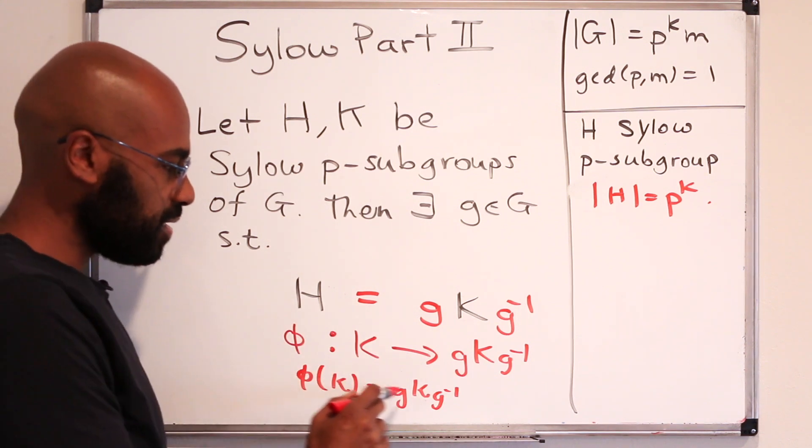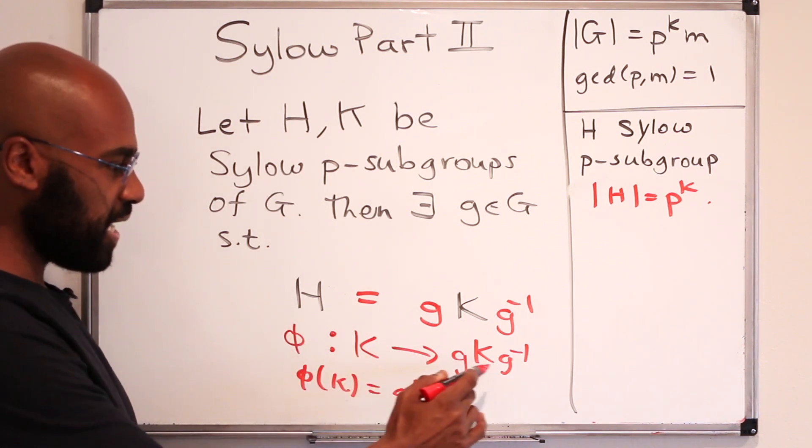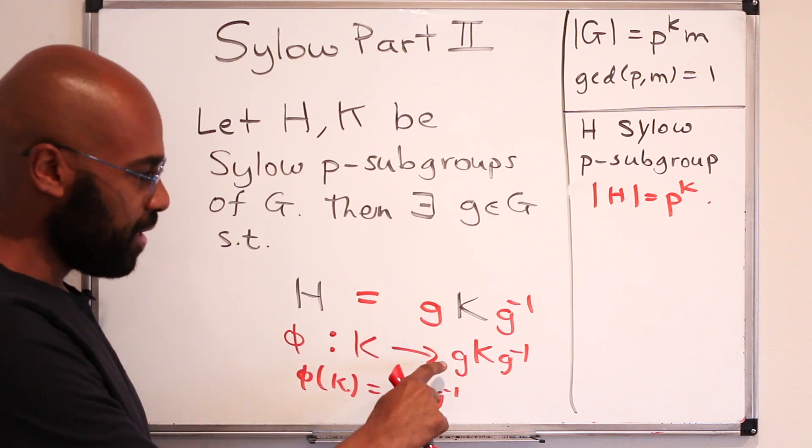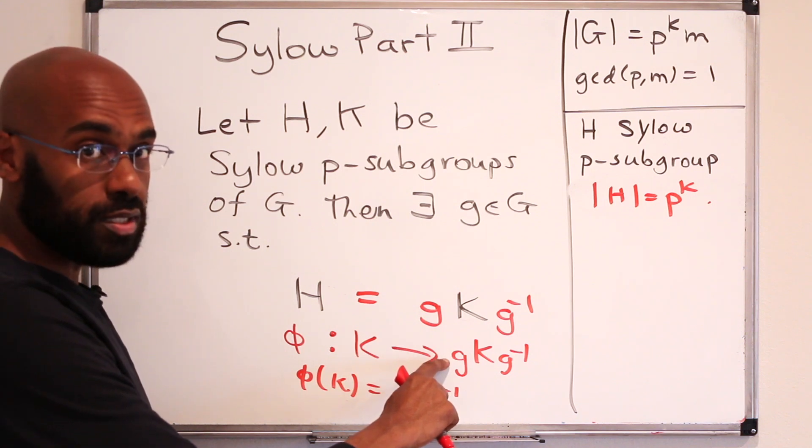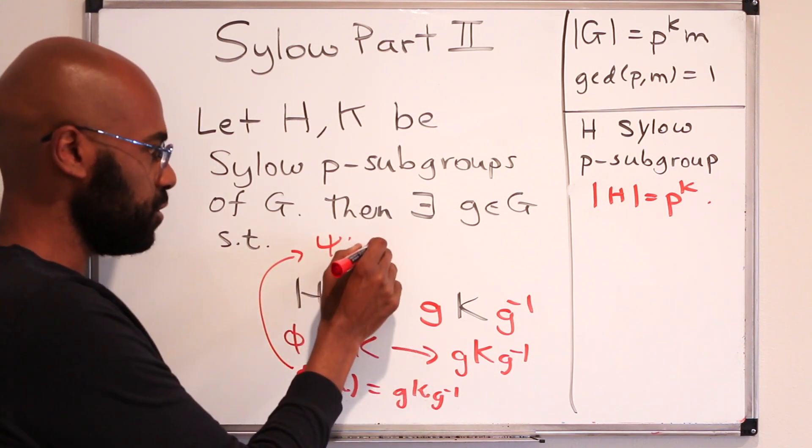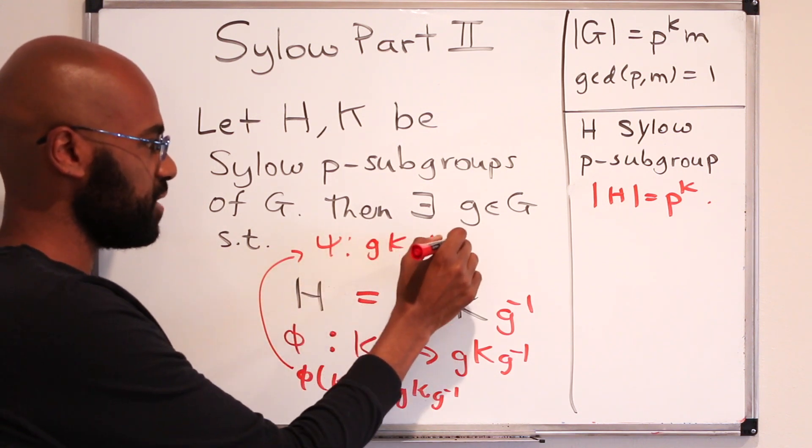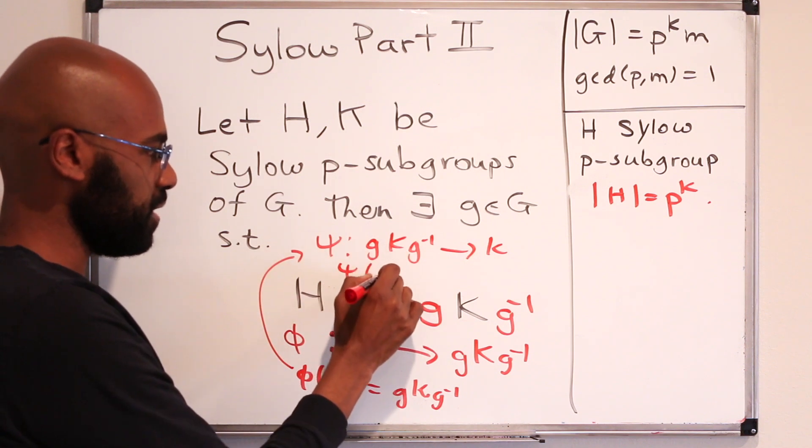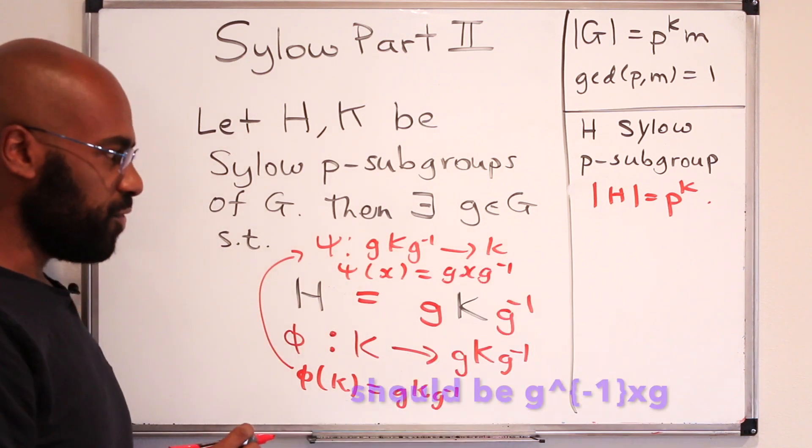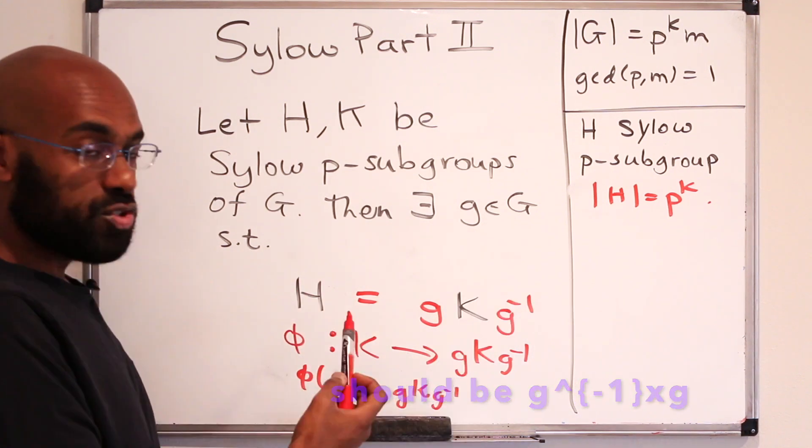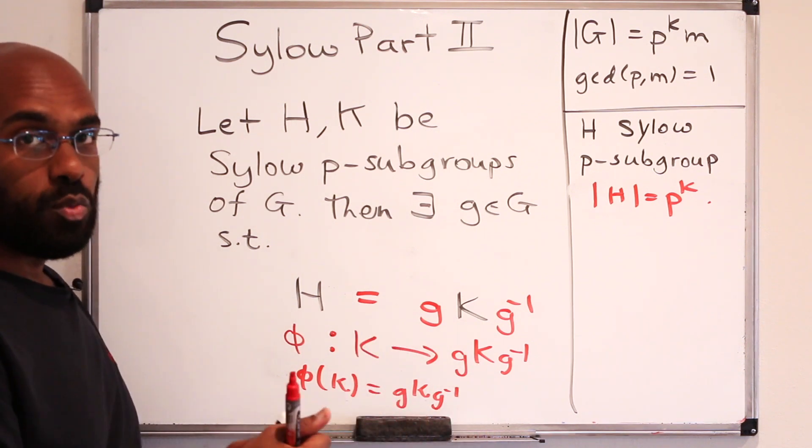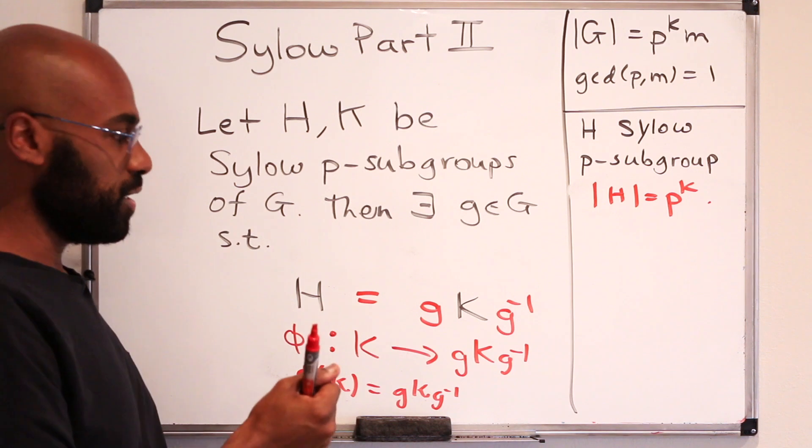To see that this is a bijection in the first place on the level of sets, we can construct an undoing of this or an inverse map by multiplying by G inverse on the left and G on the right. So we can construct a map psi that goes from G, K, G inverse to K by sending any element in here, let's call it X, to G inverse, X, G. And if we do that, that's going to act as an inverse for this phi. So since we have a bijection on the level of sets, these two things definitely have the same size. And there's a one-to-one correspondence between the two because both of them are finite.